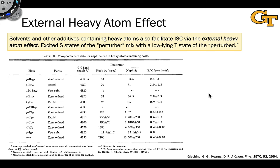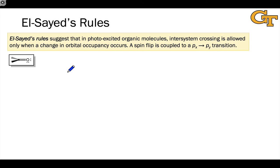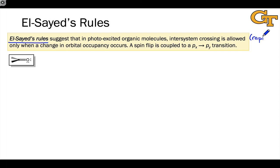We've seen that excitation electron density on a heavy atom can promote spin-orbit coupling and facilitate intersystem crossing, but there's another mechanism that does not require a heavy atom, and it is summed up succinctly by El-Sayed's Rules. El-Sayed's Rules suggest that in photo-excited organic molecules — organic chromophores capable of forming either nπ* or ππ* excited states, like the carbonyl or amine — intersystem crossing is allowed and relatively rapid only when a change in orbital occupancy occurs. The mechanism is that a change in orbital configuration from px to py is coupled to a spin flip via spin-orbit coupling.